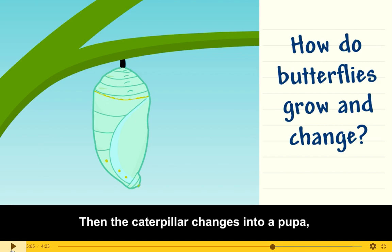Then the caterpillar changes into a pupa. So remember, the first cycle is the egg, and second, the larva — also known as the caterpillar — comes out of the egg. That's the second cycle. And the third cycle is the caterpillar changes into a pupa. This is a pupa right here, guys. That's the third cycle.